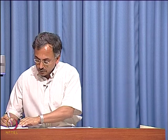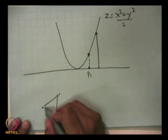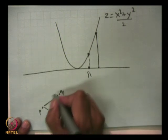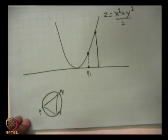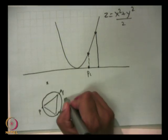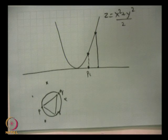Remember what I said for Delaunay triangulation: the Delaunay triangulation had the following property — if you took a triangle P, Q, R and you take the circumcircle, this circumcircle does not contain any point; all the points lie outside this circumcircle. Now let us talk about what this corresponds to in 3D.